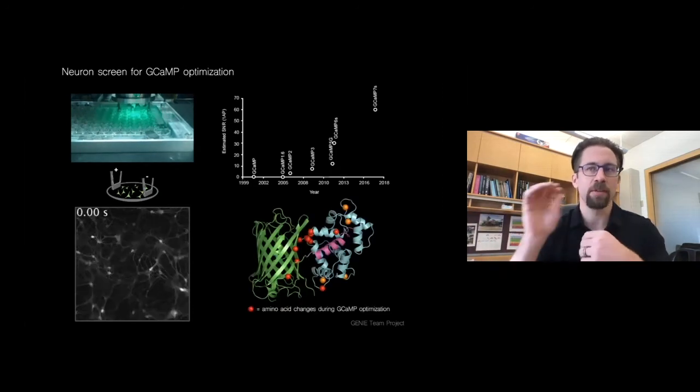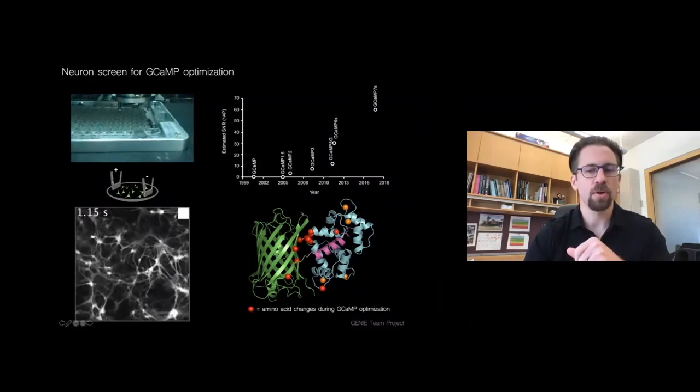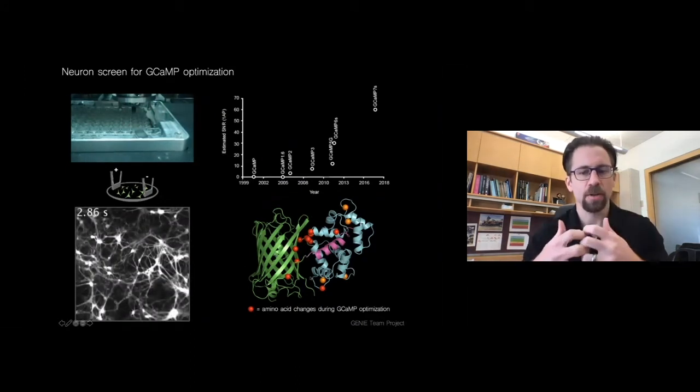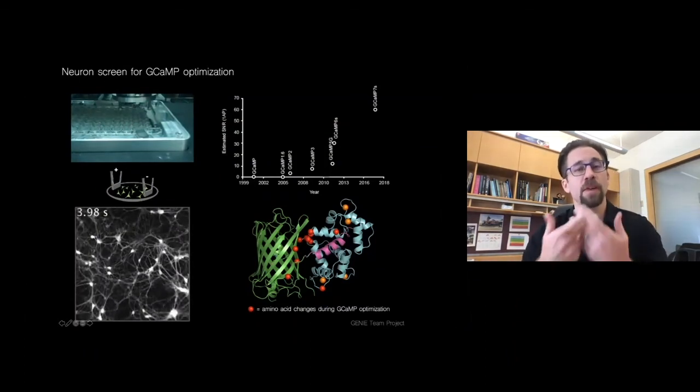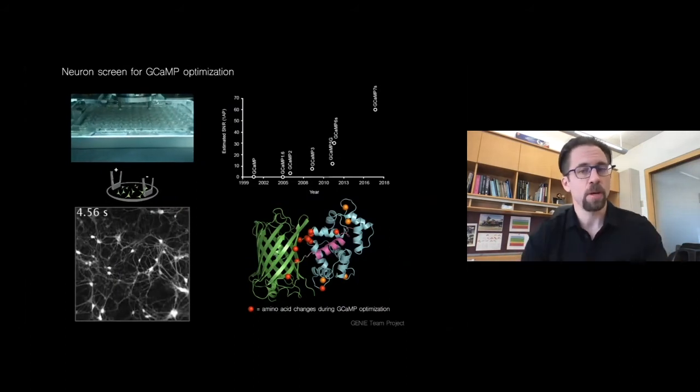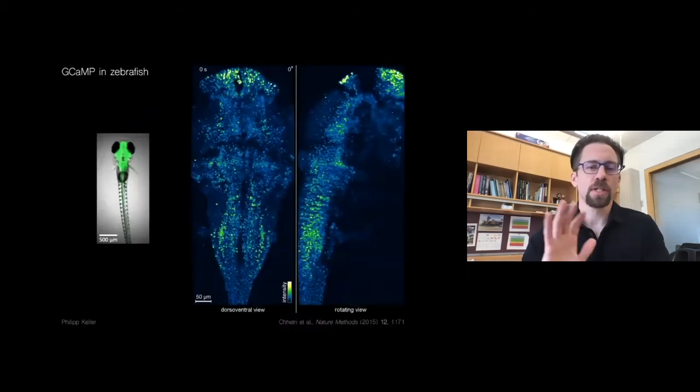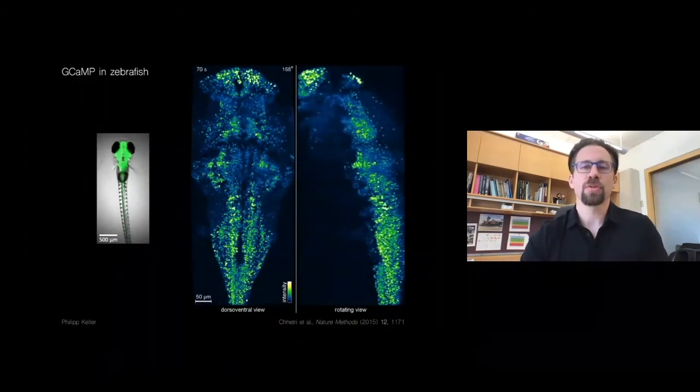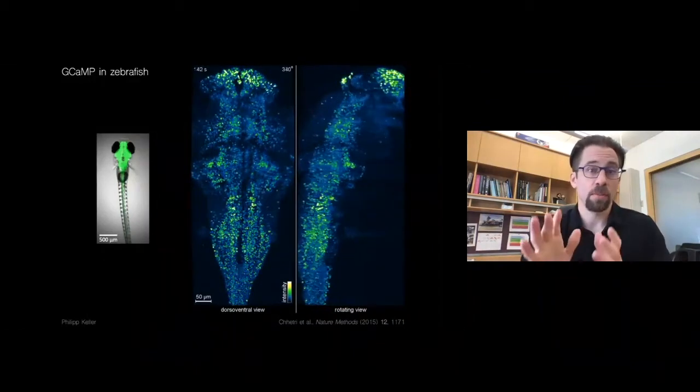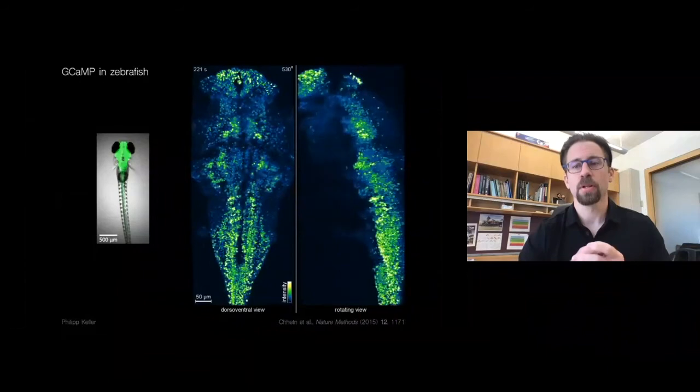If we map these changes that have been made over the years onto the structure, most of the changes actually are located at this interface between this calcium binding domain and the fluorescent protein domain, which makes sense because that's how the communication takes place. So Genie then validates these improvements that have been made in vivo in different animal models. And then makes them available to the community prior to publication. So Addgene, a not-for-profit repository for DNA plasmids, has distributed GCaMP plasmids and AAVs to thousands of labs at this point, actually. And similarly, transgenic mice and flies and fish expressing GCaMP are also available from other repositories.